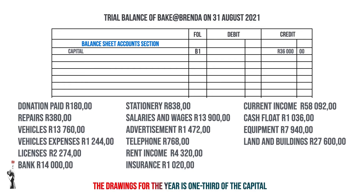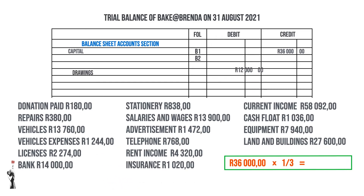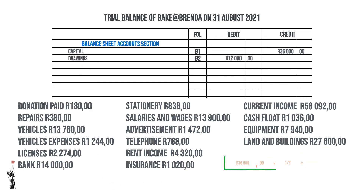The example states that the drawings for the year is one third of the capital. To calculate the amount, you take one third of R36,000, which equals R12,000. Remember, drawings will be recorded on the debit side.